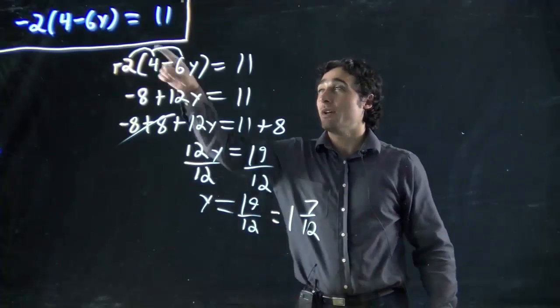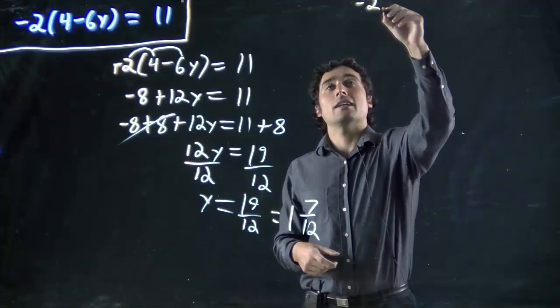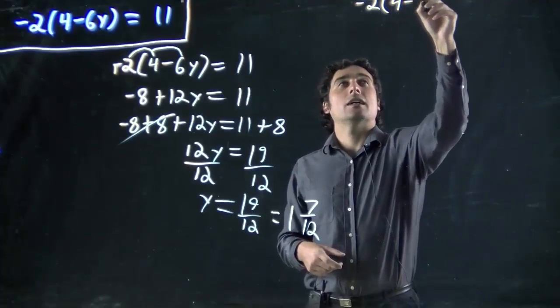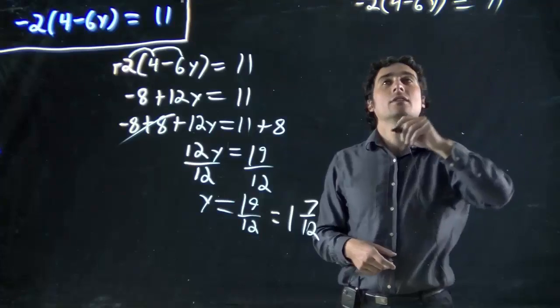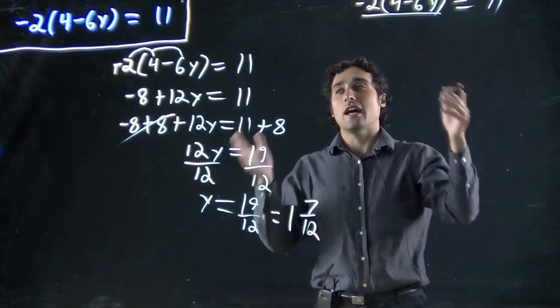What was the other solution? We could actually divide both sides by minus 2 first. So, we've got minus 2 times 4 minus 6y equals 11. Divide both sides by minus 2, because that's what's being done to the outer bracket.